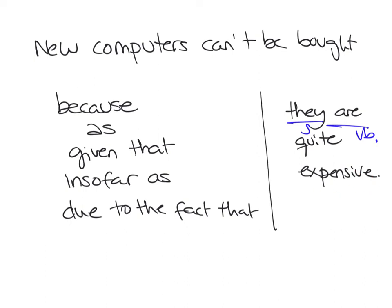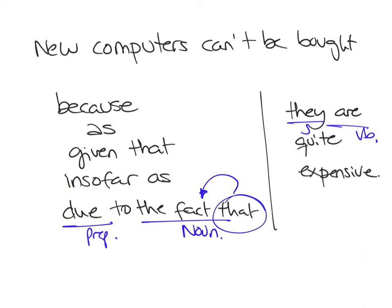Or you could say 'new computers can't be bought due to the fact that they are quite expensive.' What you're doing here is using the preposition 'due to,' then the noun, and then adding a relative clause to explain that noun. You would only use 'due to the fact that' if you're going to have a subordinate clause with subject and verb. I have to warn you — this particular one sounds a bit artificial. If you want to use it, it's fine, but it does sound a bit artificial.